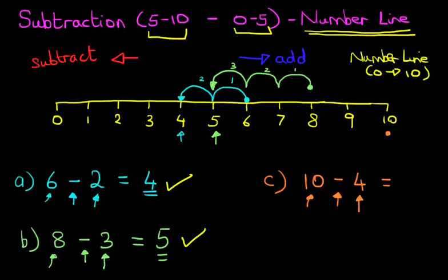Okay. Now, watch how I do this. 1. Count with me. 1, 2, 3, and 4. That was the first jump. 1, 2, 3, and 4. What number have we landed on? We have landed on number 6. 10 minus 4 equals 6.